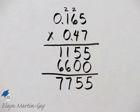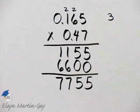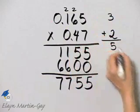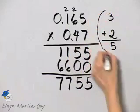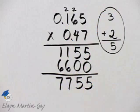Now where do we place the decimal point? This number has 3 decimal places. This number has 2 decimal places. What is 3 plus 2? It's 5. So we must place the decimal point in this product so that the answer has 5 decimal places.